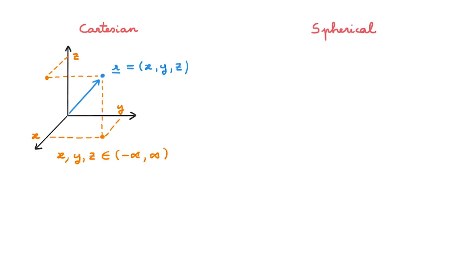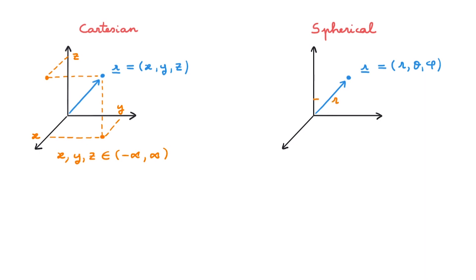Now how about spherical coordinates? Let's set up a new set of coordinate axes and the same point at r. In spherical coordinates, we describe the position of the point with a different set of three numbers: a length r and two angles theta and phi. The first is the distance between the origin and the point, which is the magnitude of the vector r — we call it scalar r. The second is the angle between the vector r and the third axis — we call it the polar angle, and label it theta. The third is built by projecting the vector r onto the horizontal plane and measuring its angle with respect to the first axis — we call it the azimuthal angle, and label it phi. The quantity r can only be 0 or positive, the polar angle theta runs from 0 to pi, and the azimuthal angle phi runs from 0 to 2 pi.